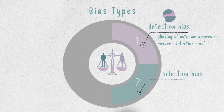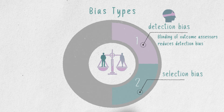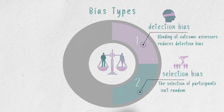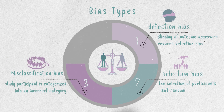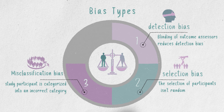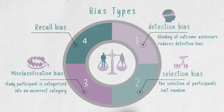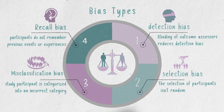Second, selection bias is a type of error that occurs when the researcher decides who is going to be studied. It's usually associated with cases where the selection of participants is not random. Third, misclassification bias occurs when a study participant is categorized into an incorrect category, altering the observed association or the research outcome of interest. Last, recall bias is a systematic error that occurs when participants do not remember previous events or experiences accurately.